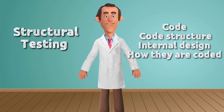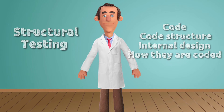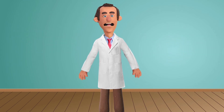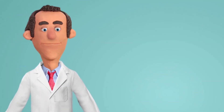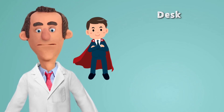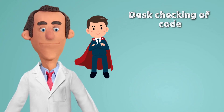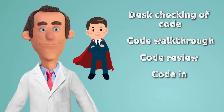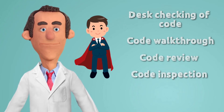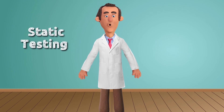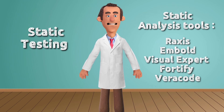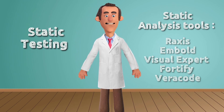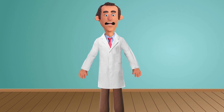White box testing is done in two ways: by humans or by computer. Testing done by humans includes desk checking of code, code walkthrough, code review, and code inspection. For static testing, there are some static analysis tools which reduce the manual work and perform analysis.